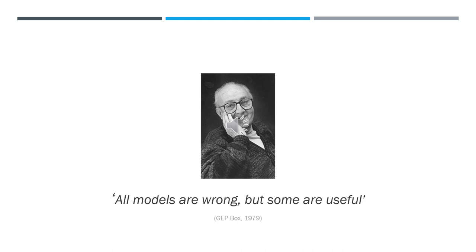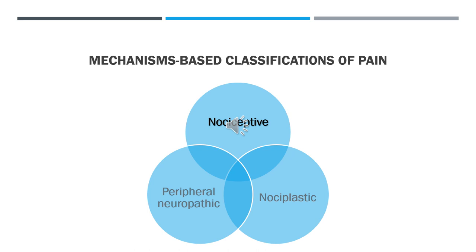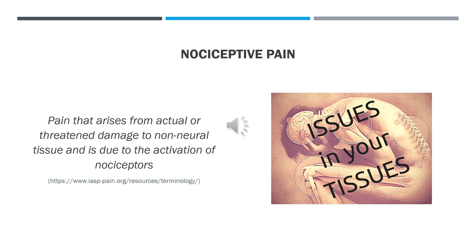Let's take a more detailed look at these three mechanisms based classifications, beginning with nociceptive pain. Nociceptive pain has been defined as pain that arises from actual or threatened damage to non-neural tissue and is due to the activation of nociceptors. A relative dominance of nociceptive pain is attributable to a relative dominance of activation of nociceptors in peripheral somatic or visceral tissues, and this category most closely reflects the biomedical model.